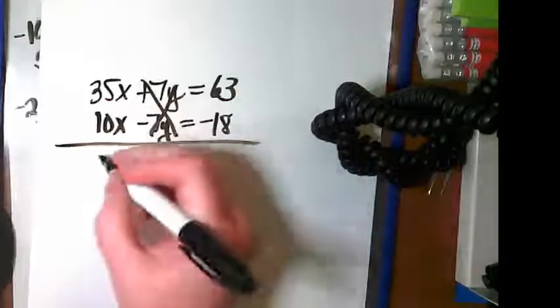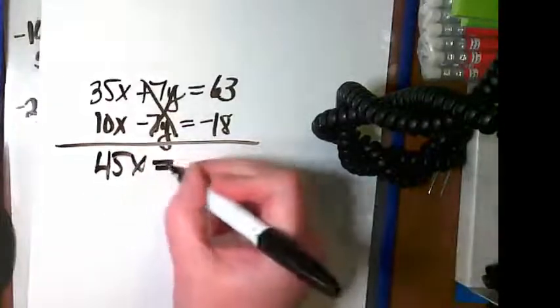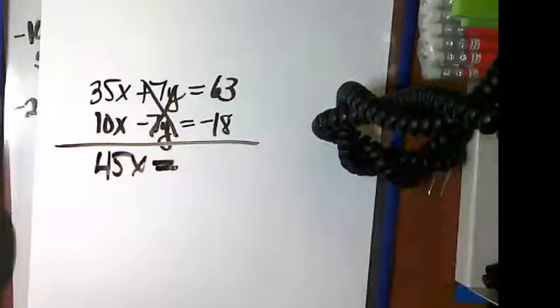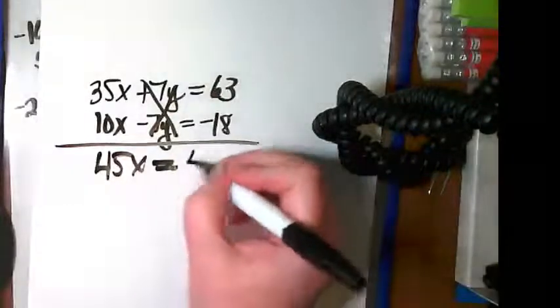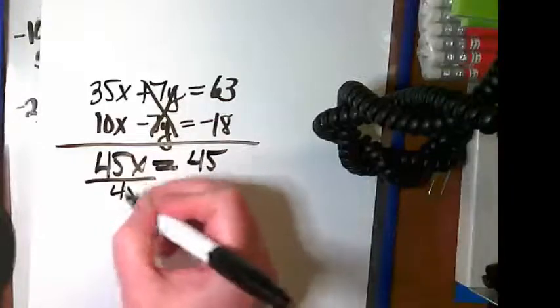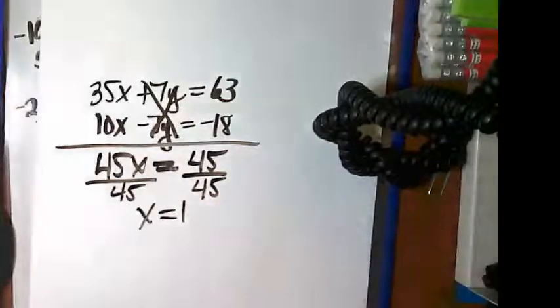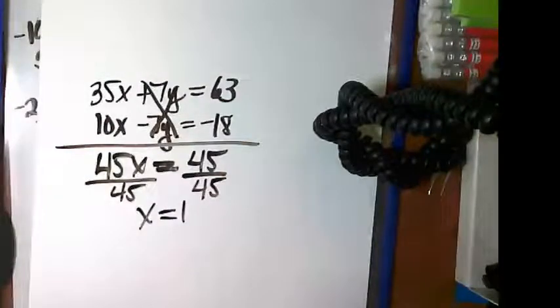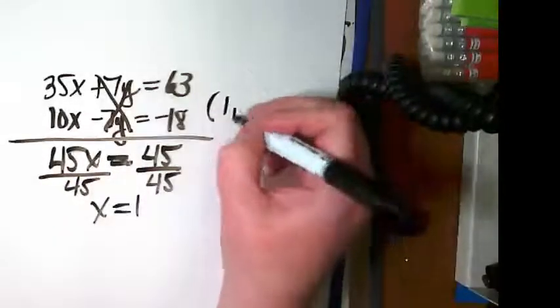All right, so this is going to end up being 45x is equal to 63 minus 18 is 45. So from our other page, we got y equals 4, so the solution to this is going to be 1 comma 4.